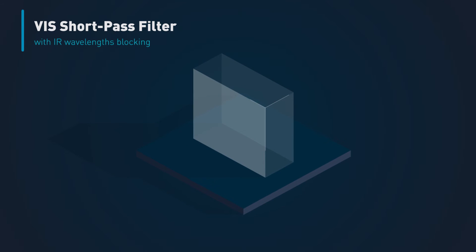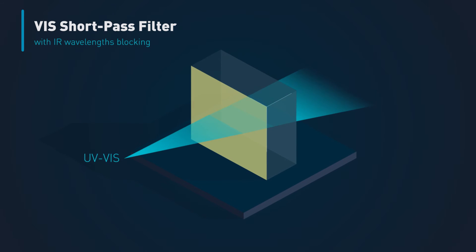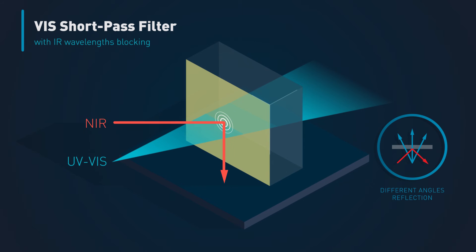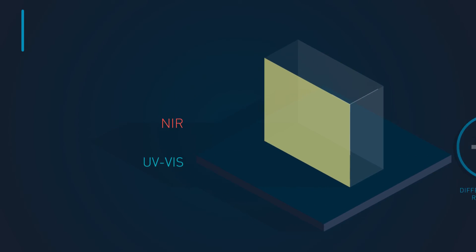For a company that provides optical solutions for the machine vision industry, we managed to develop a VIS short-pass filter with infrared wavelength blocking. As needed, we conduct additional research to ensure operational excellence and work at different angles for varied reflection and transmission responses.